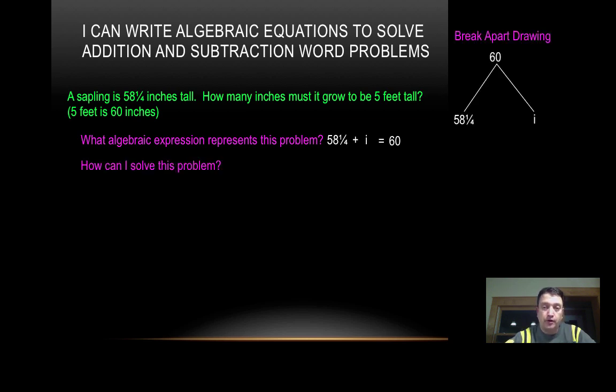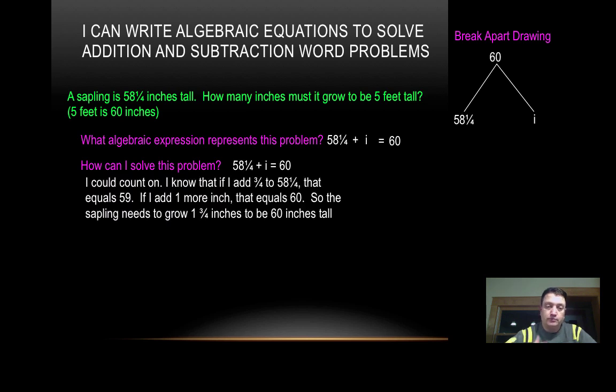And there's my break-apart drawing for that. So how can I solve this problem? Well, I can actually solve this by using the count up method. That's going to be the first thing I can do. So if I count on, I know that if I add 3 fourths to 58 and a quarter, that's going to be 59, and one more is going to give me 60. So the sapling needs to grow a total of 1 and 3 quarter inches to be 60 inches tall.